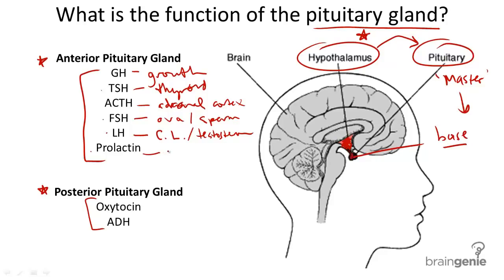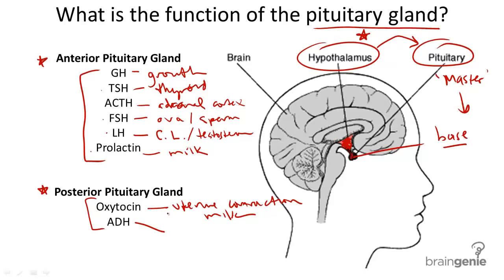Prolactin is only released after childbirth and stimulates the mammary glands to produce breast milk. In the posterior pituitary gland, oxytocin stimulates the uterus to contract during childbirth — uterine contraction — and it also causes the mammary glands to release milk for breastfeeding. Antidiuretic hormone, or ADH, targets the kidneys and is also known as vasopressin. Its function is to cause the kidneys to prevent water loss.